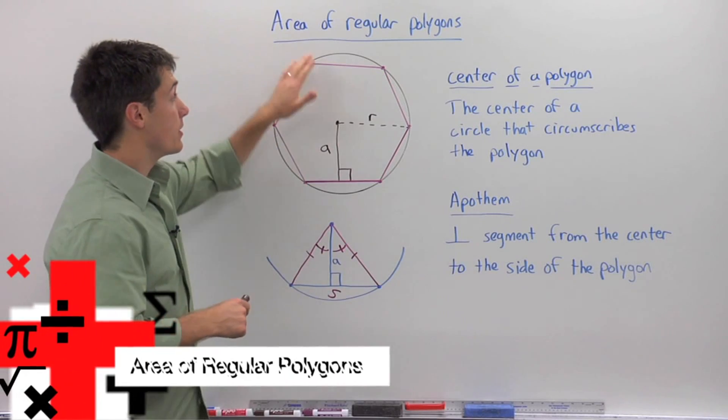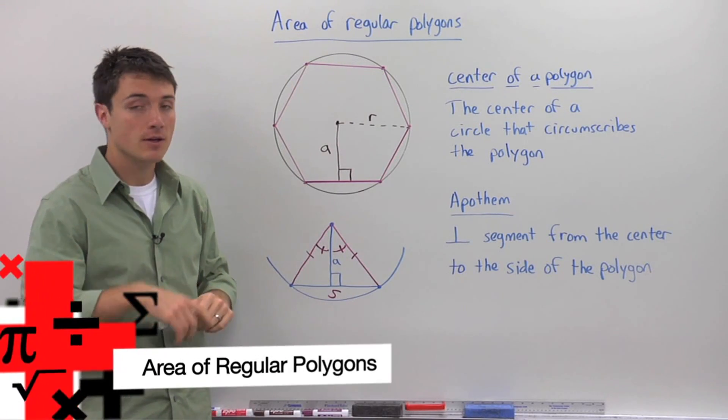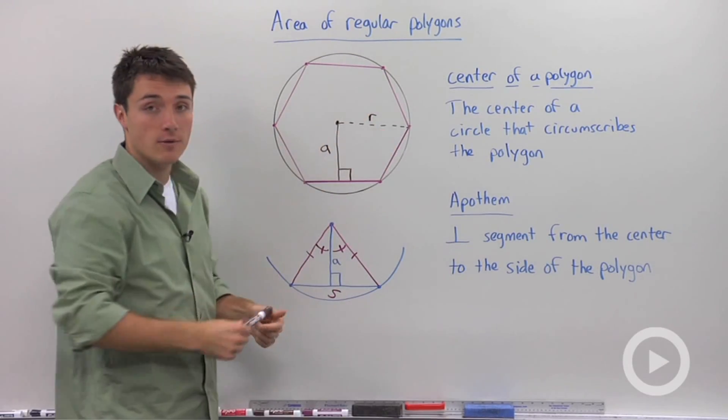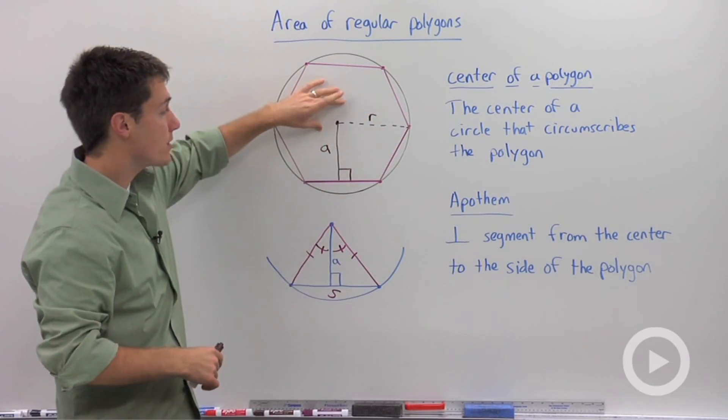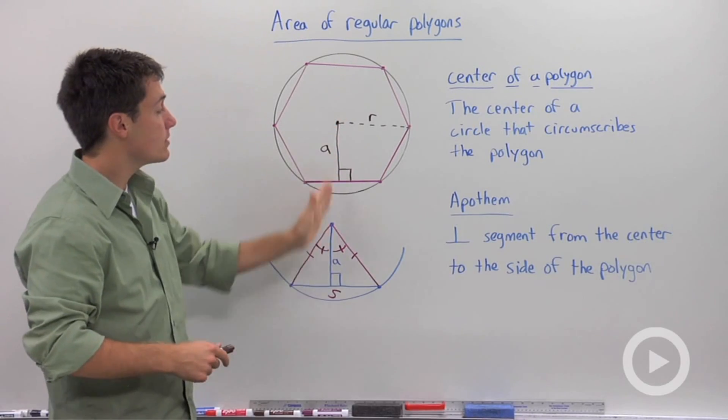If we want to calculate the area of any regular polygon, the first thing we need to do is to write it inscribed in a circle. And by doing that, we've created the ability to draw an apothem.